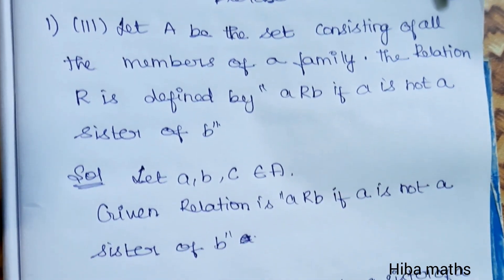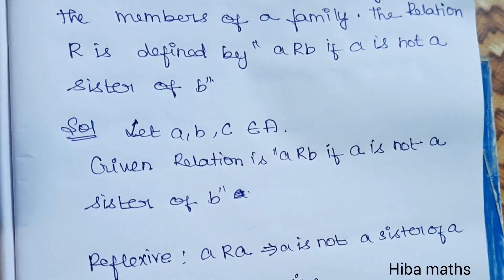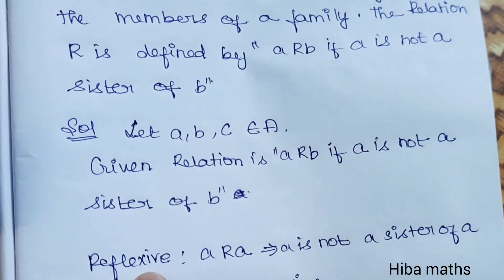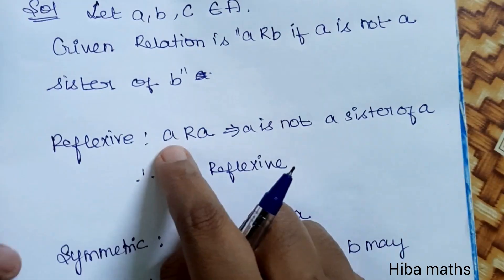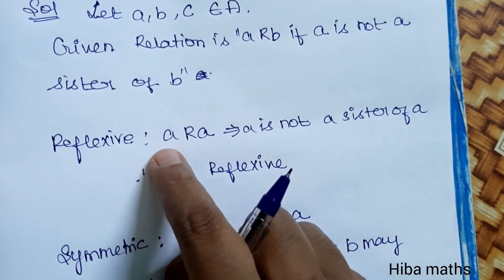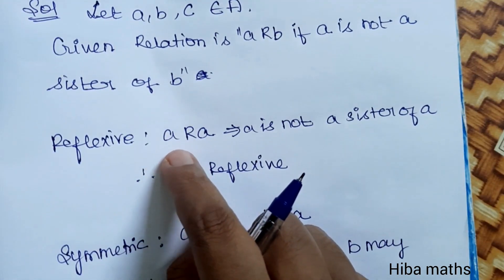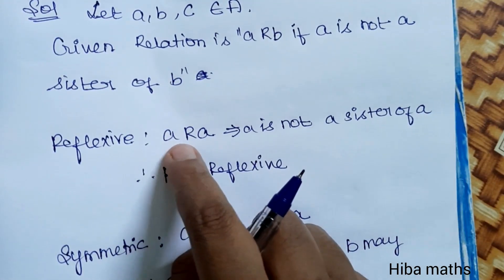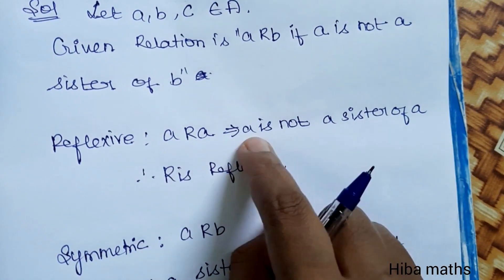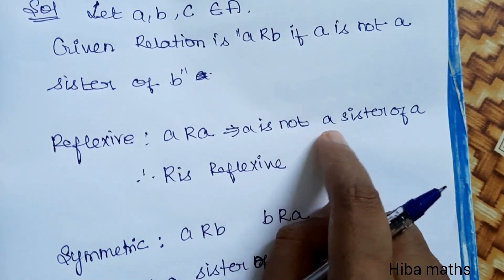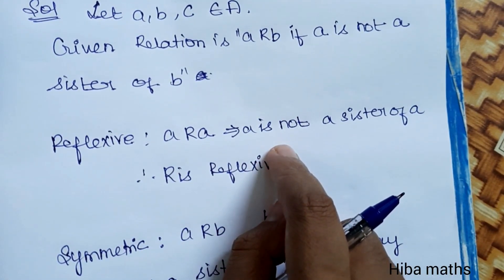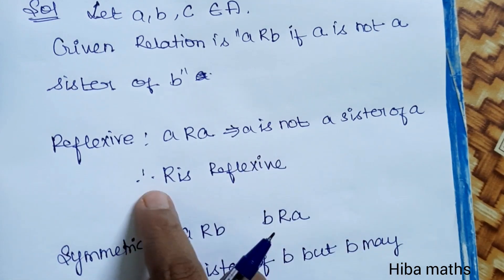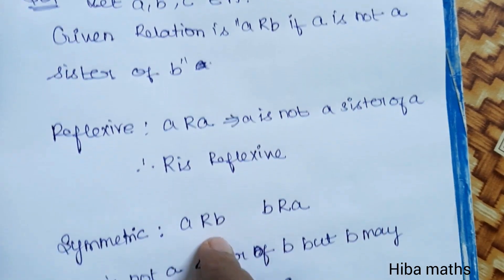A is a set of all members of a family. First, the Reflexive Condition. Reflexive condition means A relates A — that is, A is not a sister of A. Since I cannot be a sister of myself, A relates A holds. So the relation is Reflexive.